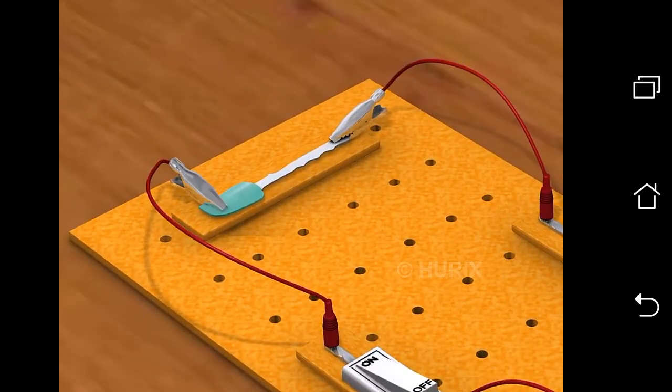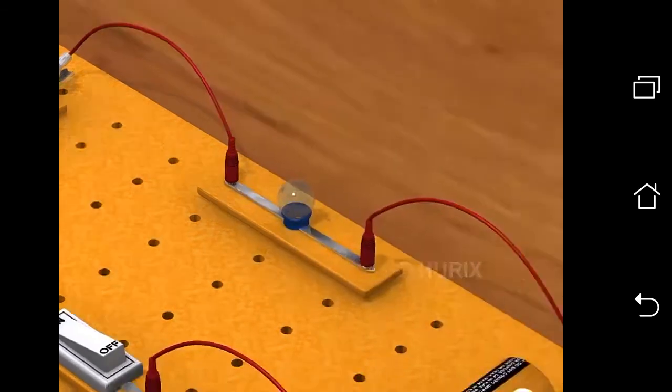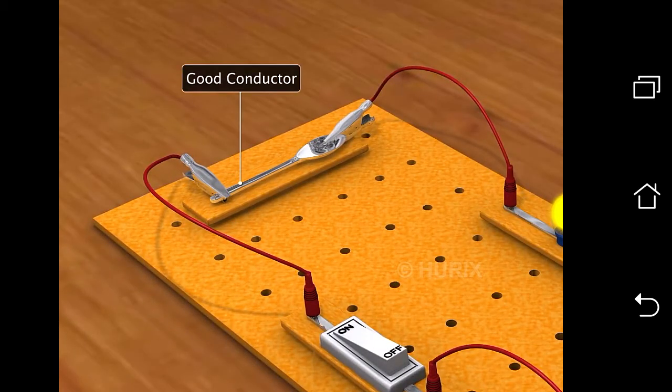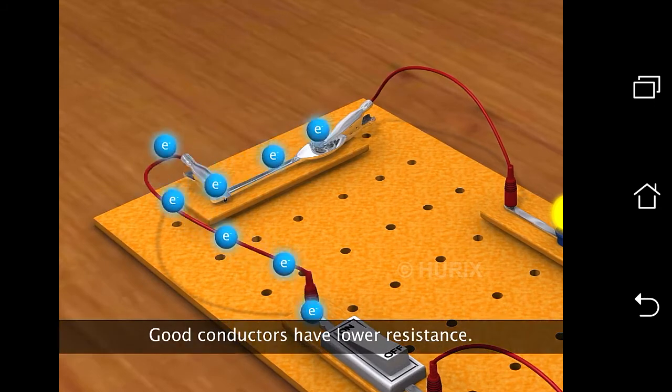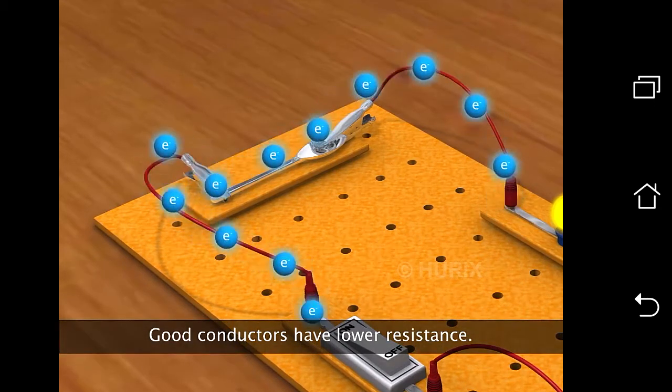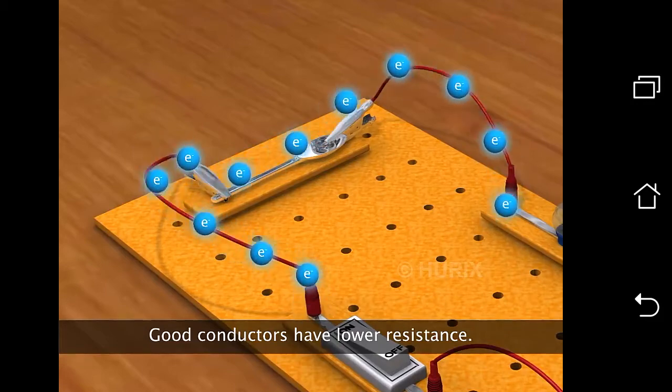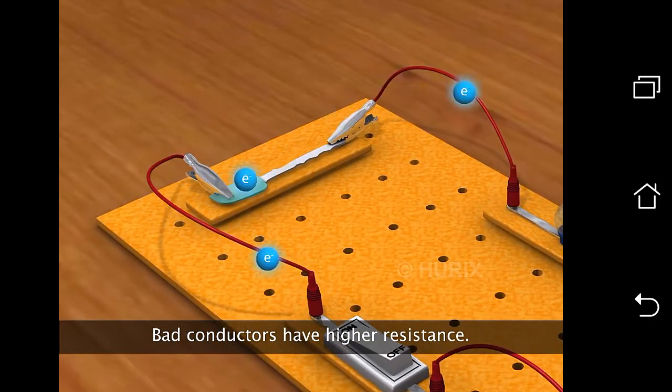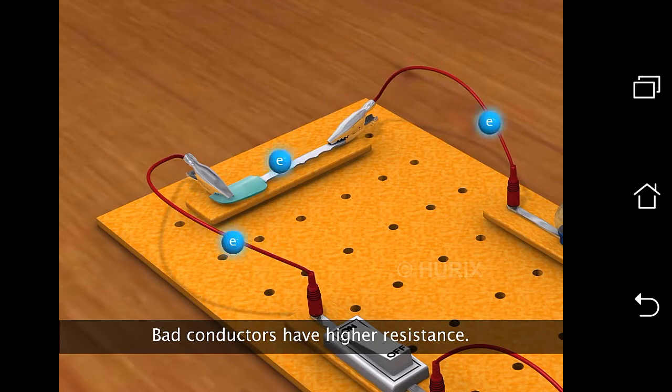The rubber spatula is a bad conductor. But silver spoon is a good conductor. Good conductors have lower resistance and the current passing through the circuit will be more. Comparatively, bad conductors have more resistance and the current passing through the circuit will be much less.